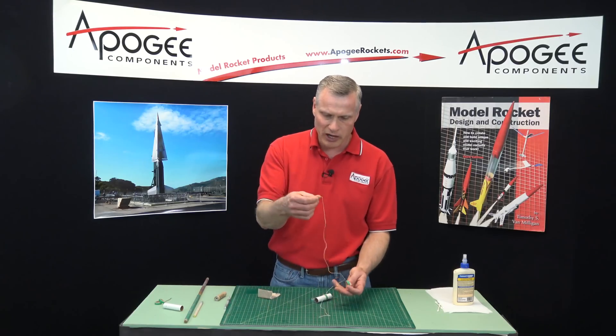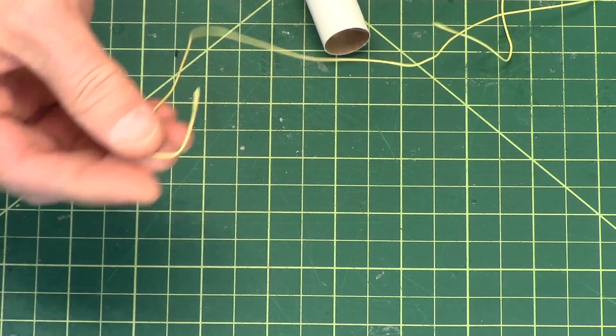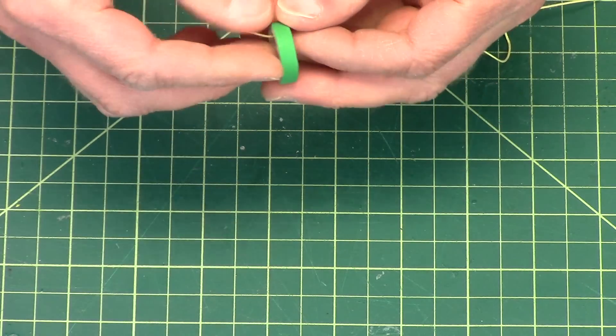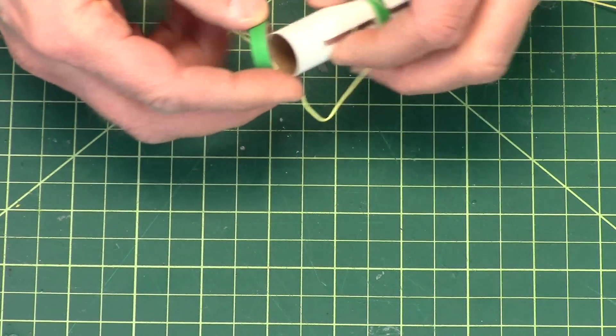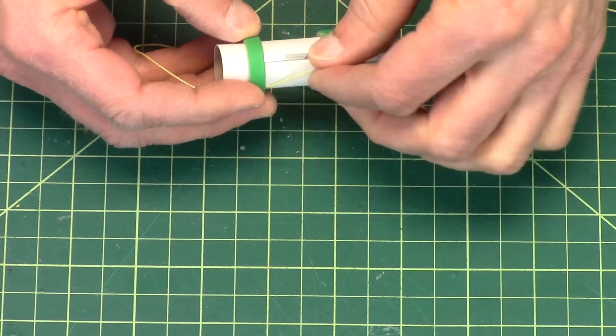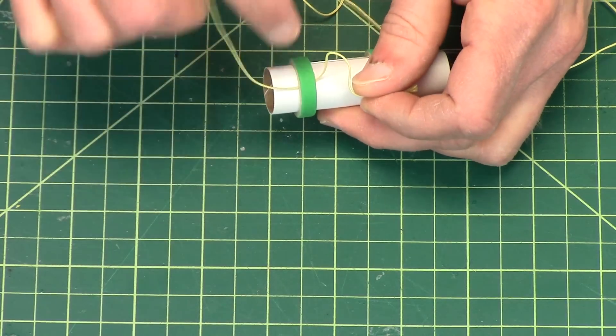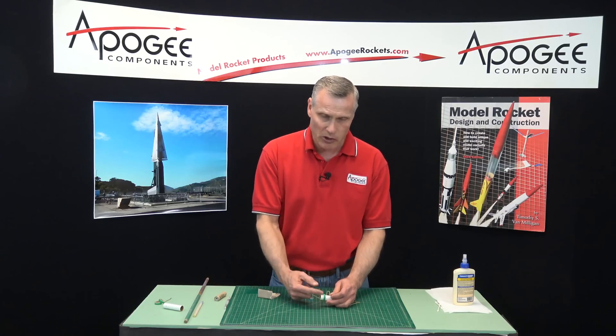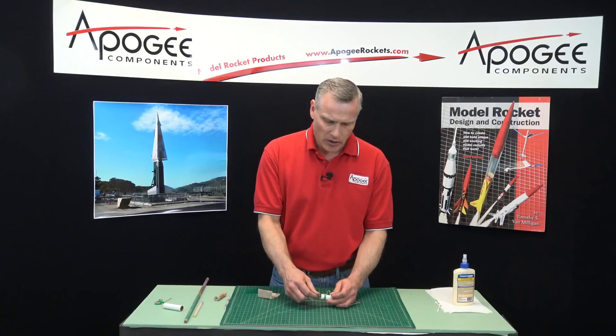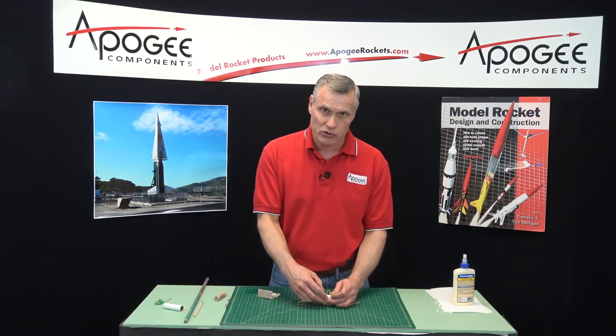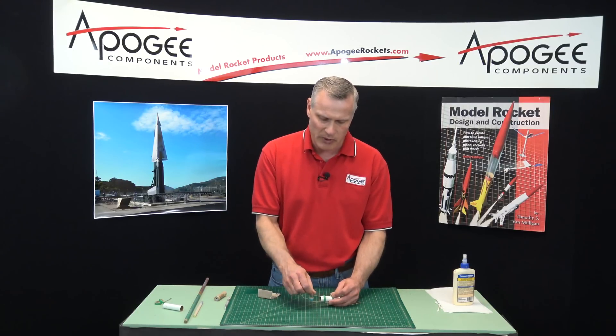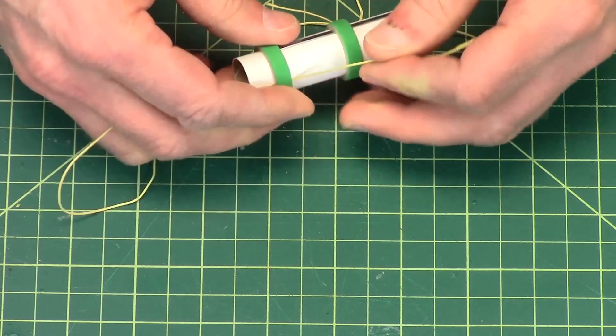Now, another thing that you might have to do on your particular kit is to tie the shock cord onto the tube. The reason we do it here is because this is one of the strongest parts of the engine. The engine in the back of the rocket is one of the strongest parts of the rocket. So it makes a really good anchor so it's not going to pull out.